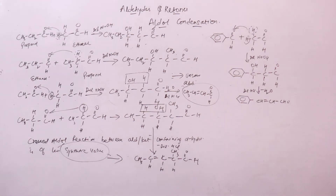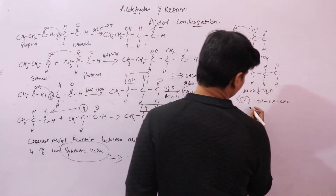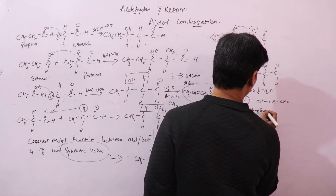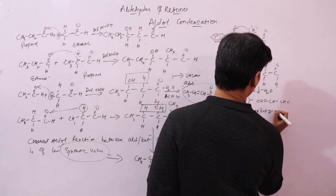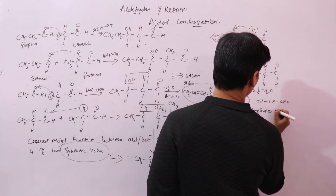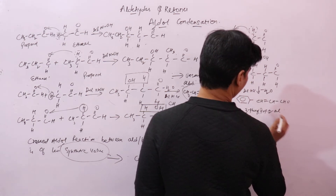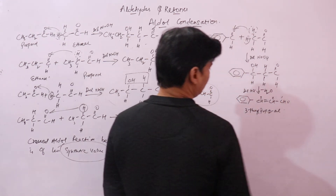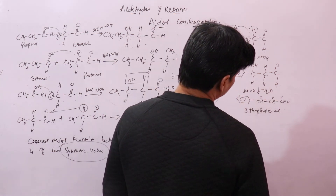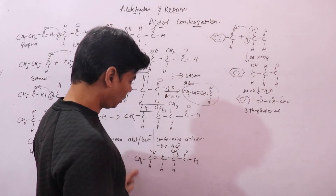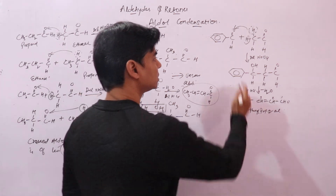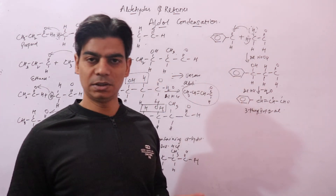This unsaturated aldehyde is called cinnamaldehyde, also known as 3-phenylprop-2-enal. This is how we make aldol condensation better from a synthetic point of view, because this is also a crossed aldol condensation where two different aldehydes react, but since one — benzaldehyde — does not contain alpha hydrogen, you do not get a mixture of products.